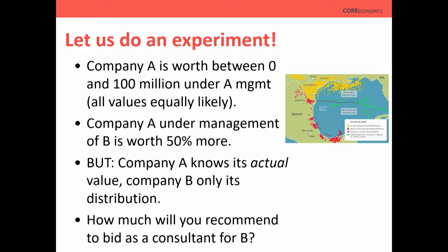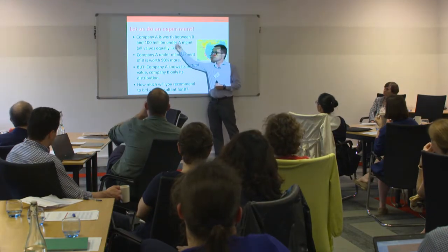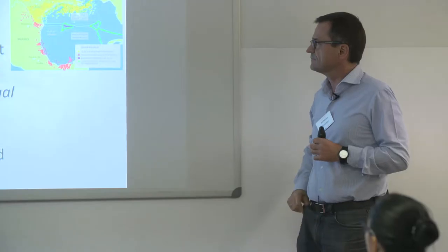Here's the setup. There's a company A that is worth between zero and a hundred million, let's say they own a tract somewhere in the Gulf of Mexico — there may or may not be oil there. Company B is thinking of buying company A. B has better management tools and better drilling, so that same company under B's management is worth fifty percent more — multiply by 1.5.